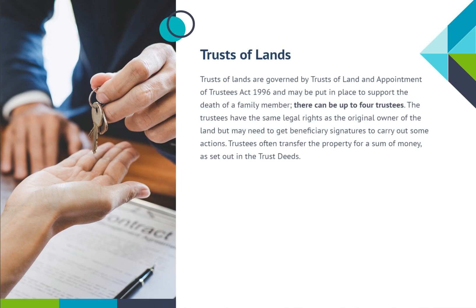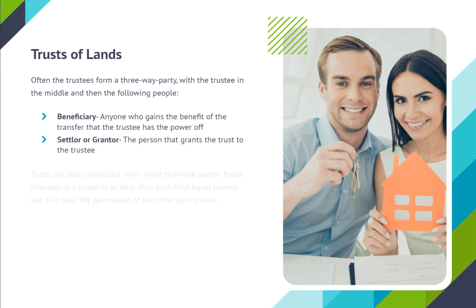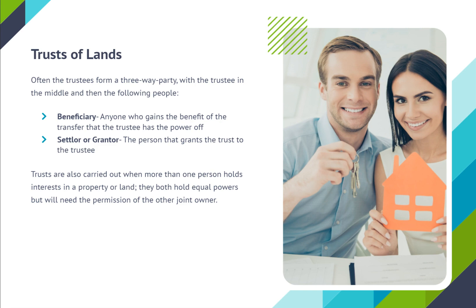Trusts of lands are governed by the Trusts of Land and Appointment of Trustees Act 1996, and may be put in place to support the death of a family member. There can be up to four trustees. The trustees have the same legal rights as the original owner of the land, but may need to get beneficiary signatures to carry out some actions. Trustees often transfer the property for a sum of money as set out in the trust deeds. Often the trustees form a three-way party, with the trustee in the middle, a beneficiary — anyone who gains the benefit of the transfer that the trustee has power over — and a settlor or grantor, the person that grants the trust to the trustee. Trusts are also carried out when more than one person holds interests in a property or land; they both hold equal powers but will need the permission of the other joint owner.